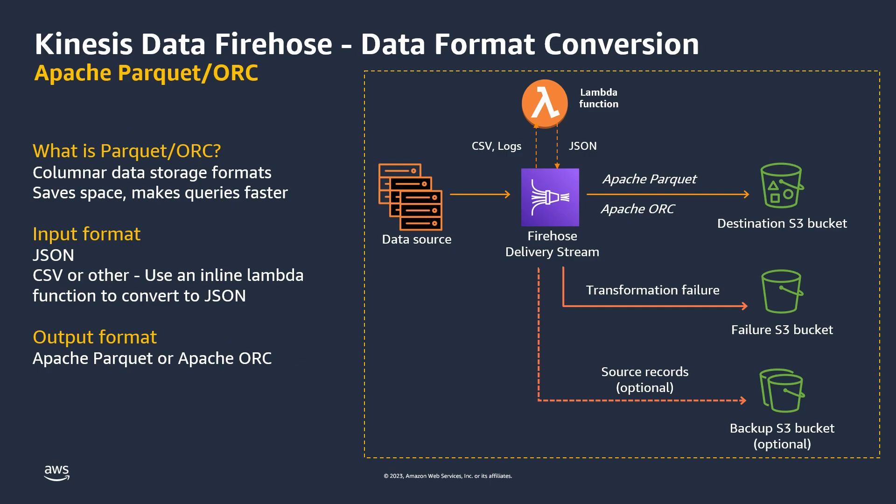Kinesis Data Firehose can convert the format of your input data from JSON to Apache Parquet or Apache ORC before storing the data in Amazon S3. Parquet and ORC are columnar data formats that save space and enable faster queries compared to row-oriented formats like JSON. If you want to convert from an input format other than JSON, such as comma-separated values or CSV or structured text, you can use an inline AWS Lambda function to transform it to JSON first.